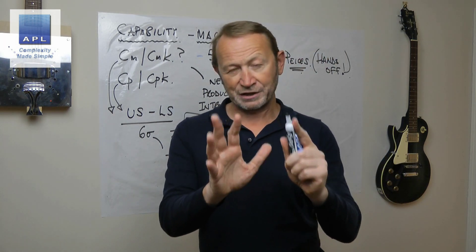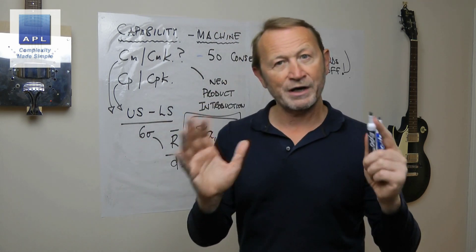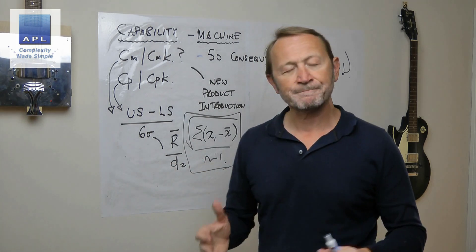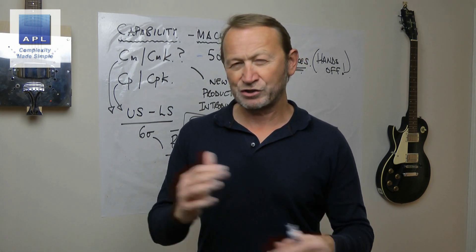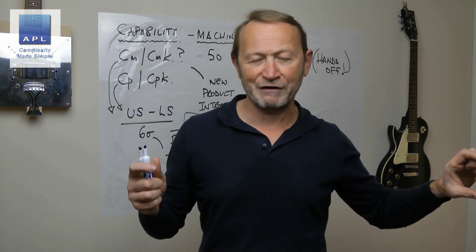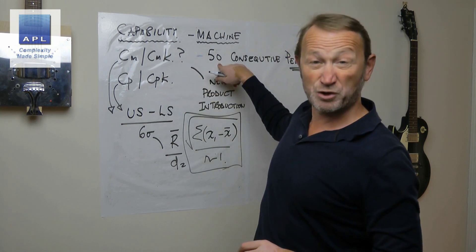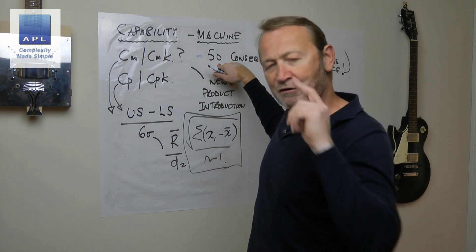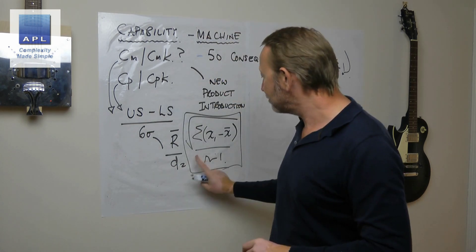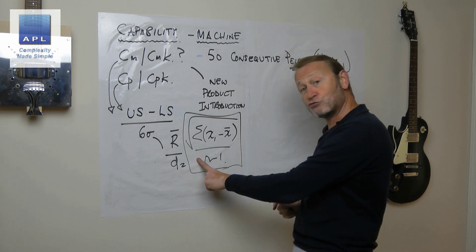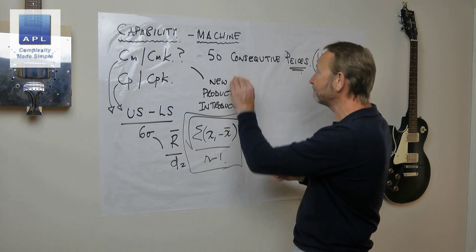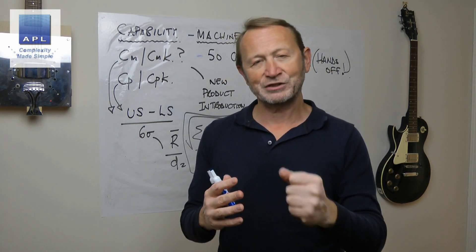I've never checked this definitively, so if someone wants to leave a comment to say I'm wrong, I'm quite happy to be corrected. But as far as I understand, I don't think these two sigma approaches would be too far apart. I did some work on a data set using both methodologies - the data set was very consistent with very little extraneous noise, similar to 50 consecutive pieces without any other variability - and the two results came out very close to one another. The calculation that's recommended is the full standard deviation calculation.